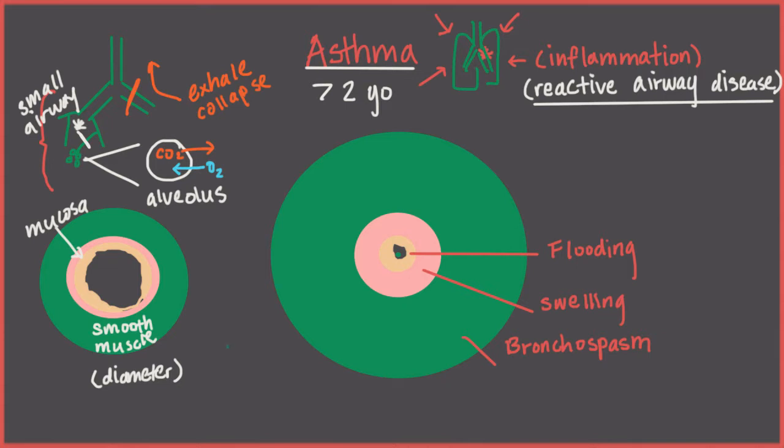If we look at x-rays of lungs, in the normal lung, the shape is something like this. Obviously, this is not an anatomically correct drawing. But the idea is, in people who have asthma, when you compare them, the shape becomes more boxy and square-like, because it's overinflated. It's like a more taut balloon.